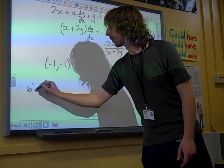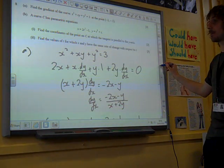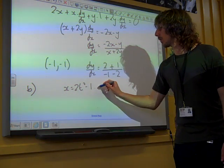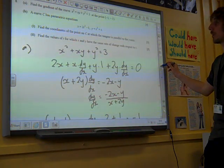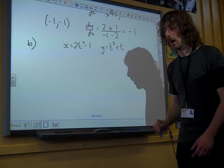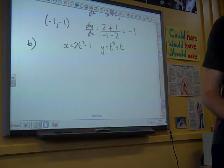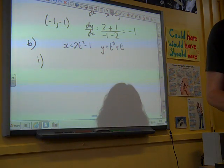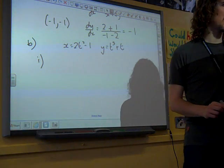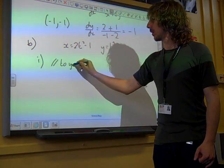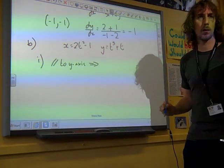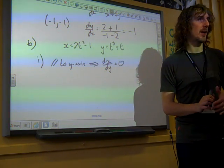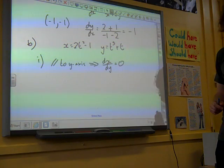Part B goes straight into some parametric equations: x is 2t squared minus 1, y is t cubed plus t. Part 1 wants us to find the coordinates of the point on C at which the tangent is parallel to the y-axis. If we think about what this means, tangent parallel to the y-axis, that tells us that we're looking for when dx/dy is equal to 0. dy/dx would be a horizontal tangent; dx/dy is the parallel to the y-axis one.